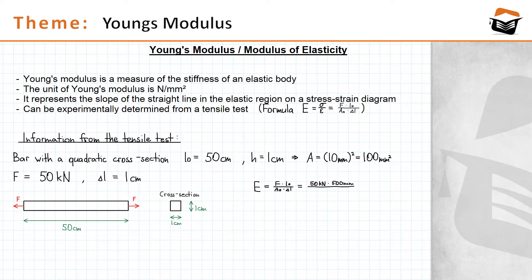Divided by A sub-zero, or just A, the cross-sectional area, which is 100 square millimeters, times delta L, the expansion, and that's 1 centimeter or 10 millimeters.